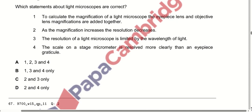Which statements about the light microscope are correct? To calculate magnification, the eyepiece and objective lenses are multiplied, not added — so that is wrong. As magnification increases, the resolution decreases — yes, they are reciprocal. The resolution of a light microscope is limited by the wavelength of light — yes. Option C is correct.